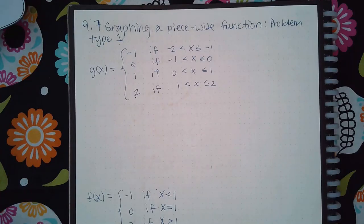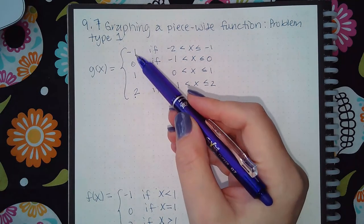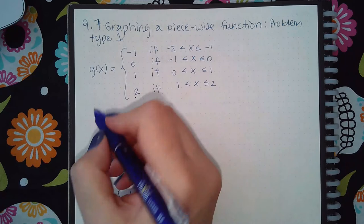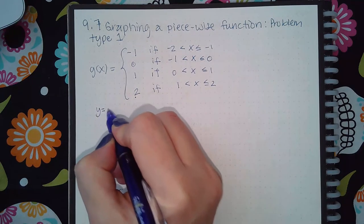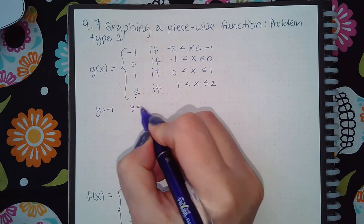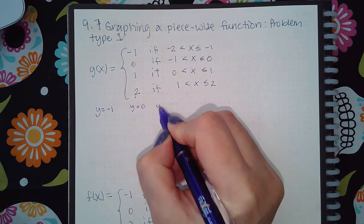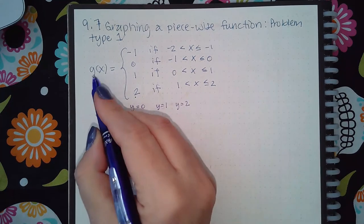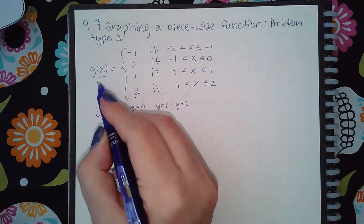This is 9.7 graphing a piecewise function, problem type 1. Here we have a bunch of constants, so when I separate this, it's going to be y equals negative 1, y equals 0, y equals 1, and y equals 2. These are, of course, the y values.